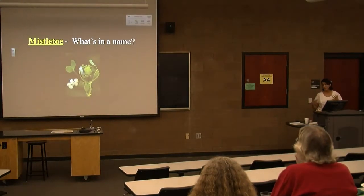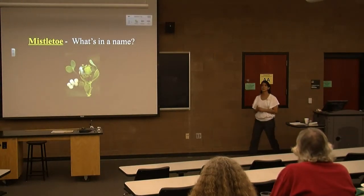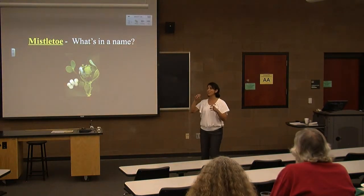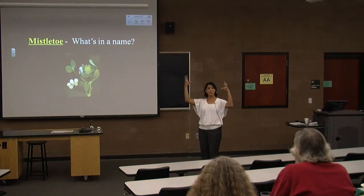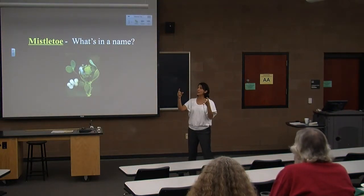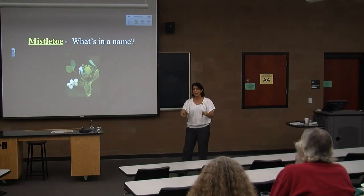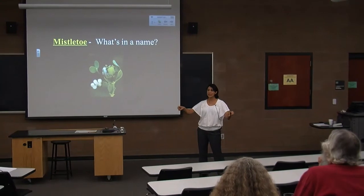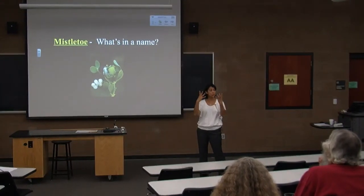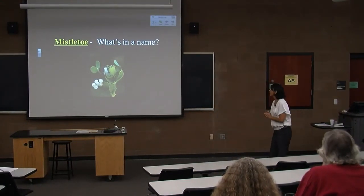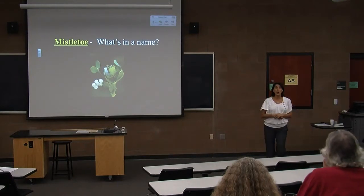The next one discussed in the video is really interesting — it's called the Christmas tree because it's a huge tree with beautiful yellow flowers that blooms in December. But it has little roots that parasitize other plants, even grasses, which is how it grows into such a large tree.